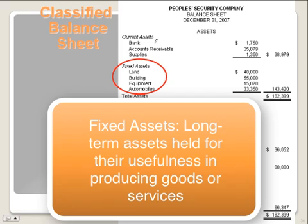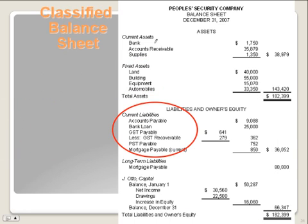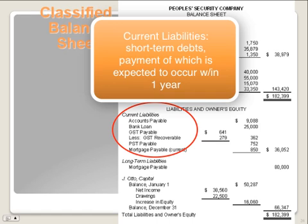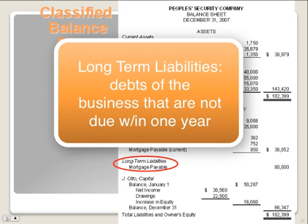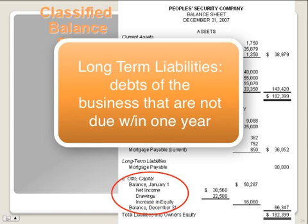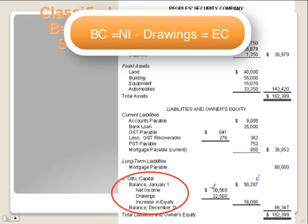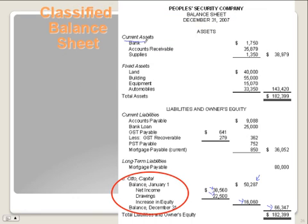Fixed assets, on the other hand, are long-term assets that we use in the business to help produce our goods or service — for example, land, building, equipment. We don't use those up. Then we have current liabilities, which are short-term debts we expect to pay within one year of the balance sheet date. And then we have long-term liabilities — not fixed liabilities — these are debts the business has that are not due within this year. The capital section remains the same: beginning capital in the middle, plus net income, minus drawings, equals an increase in capital. Add the increase to beginning capital to get ending capital.